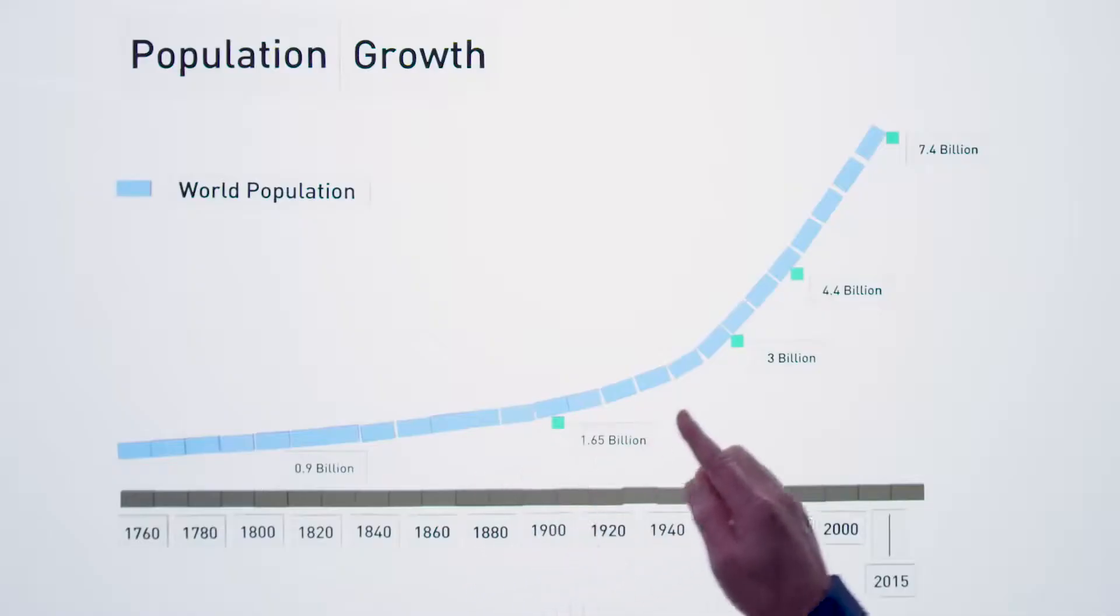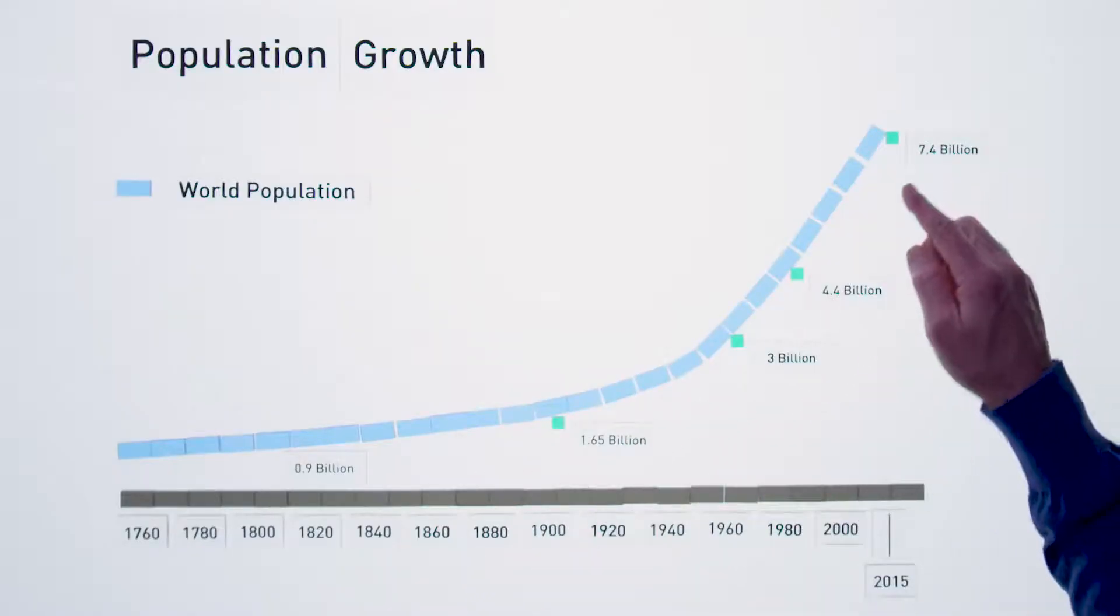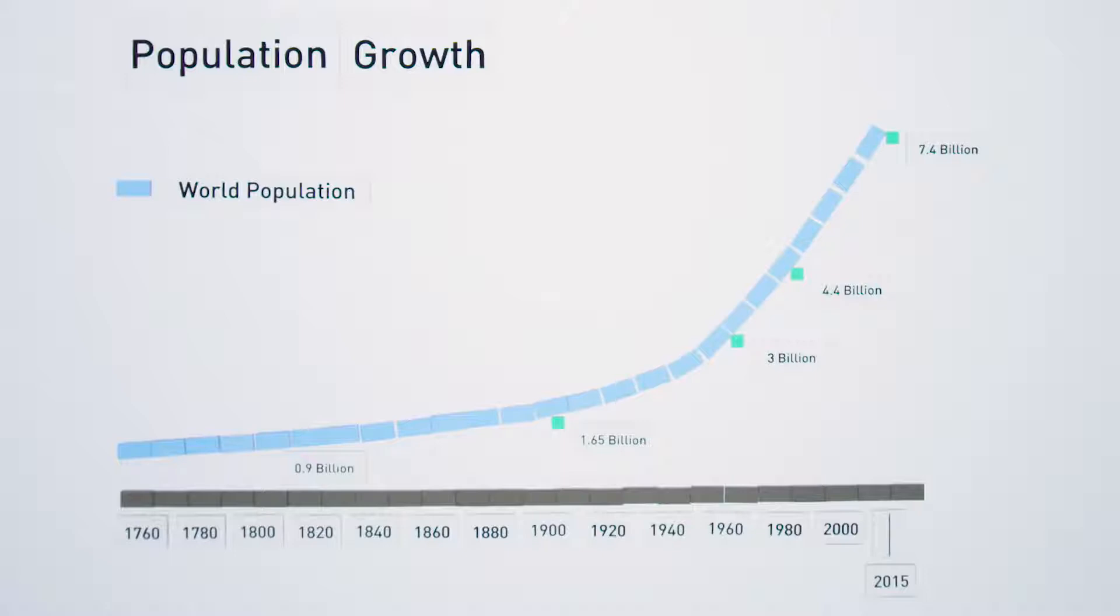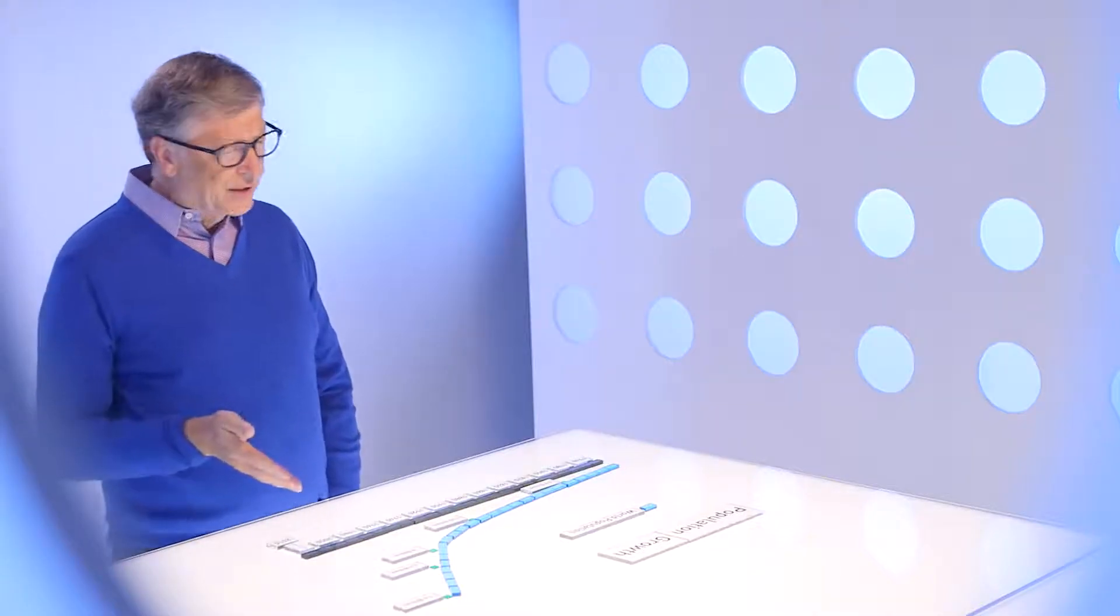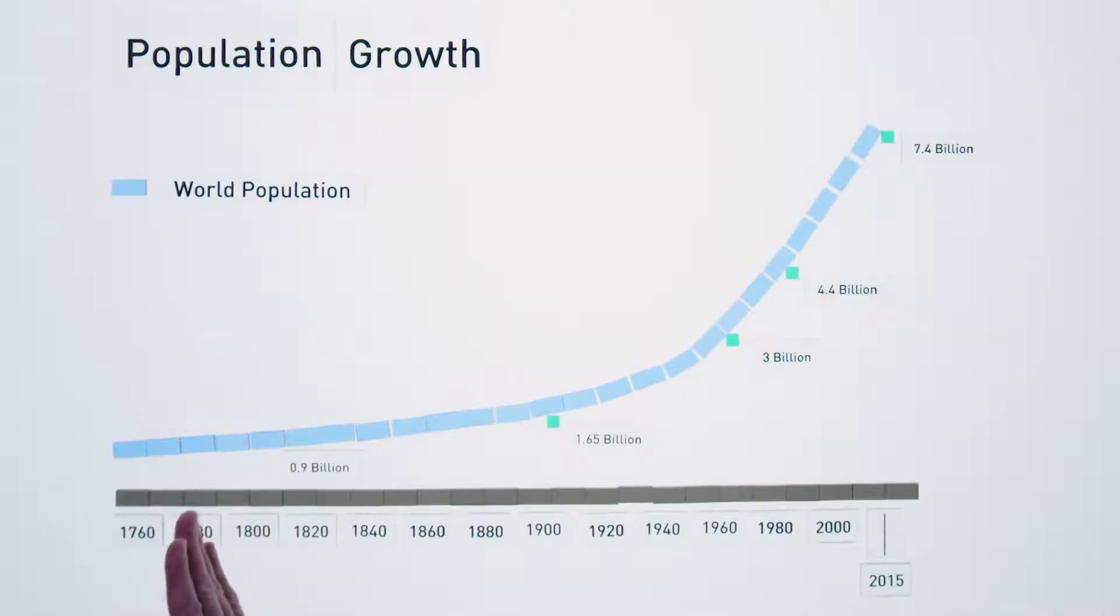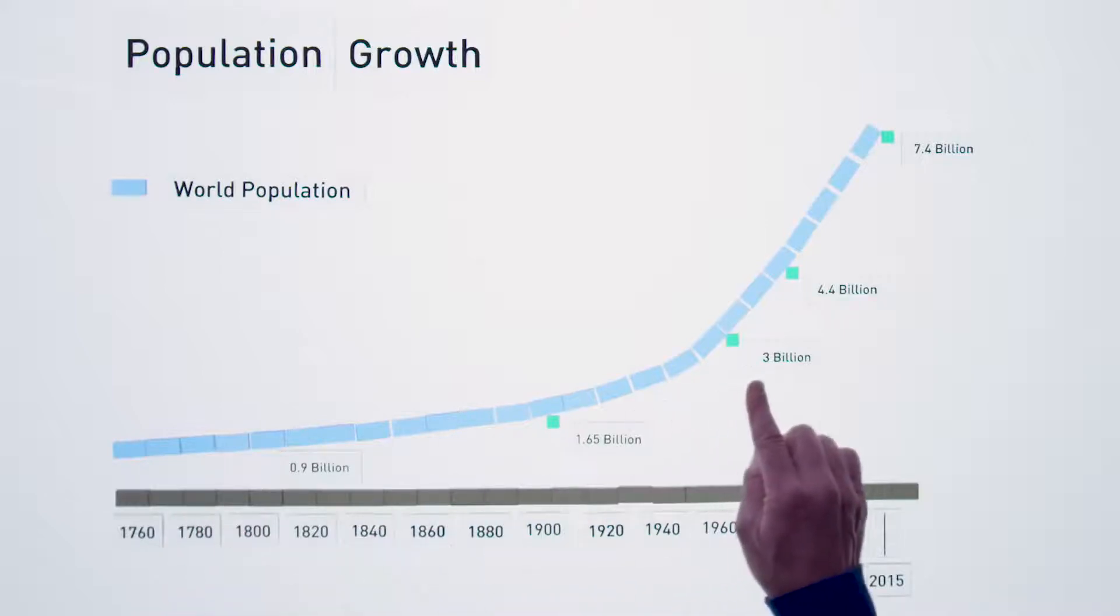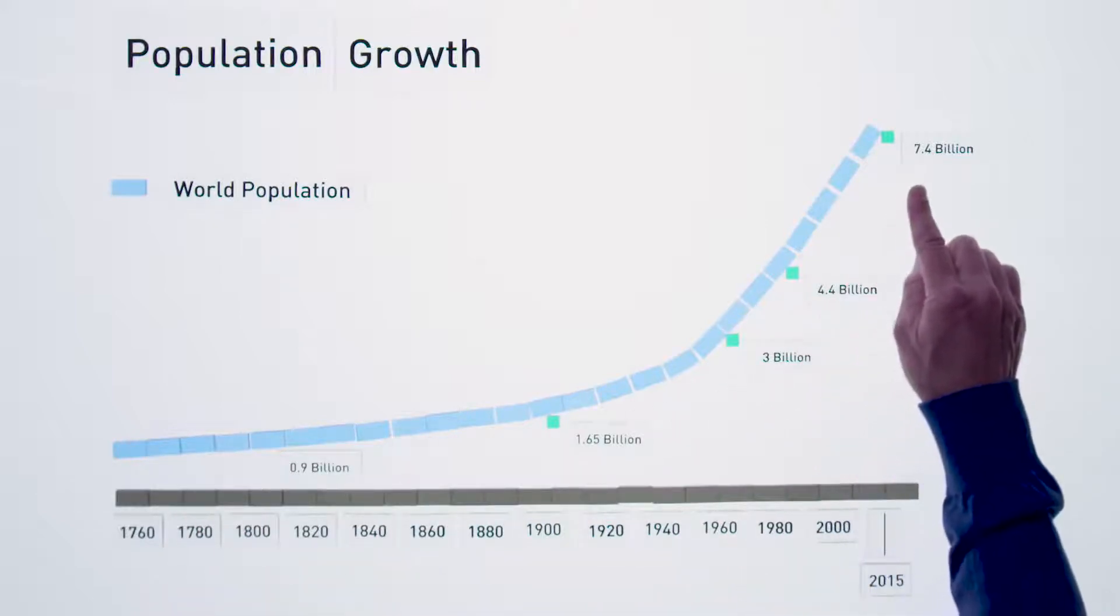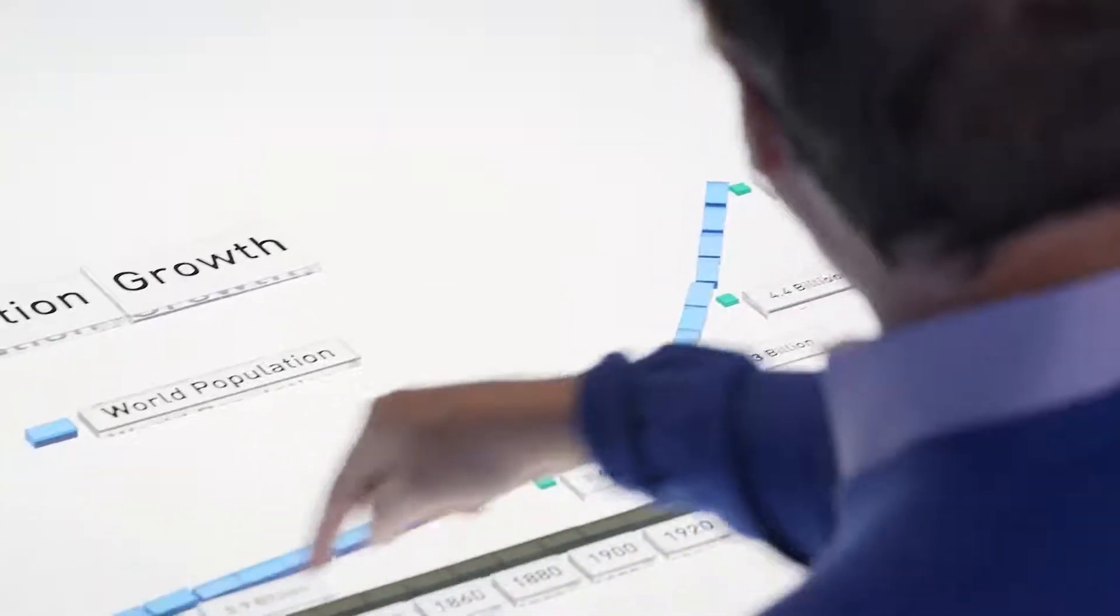Here we can see a chart that looks at the total world population over the last several hundred years. And at first glance, this is a bit scary. We go from less than a billion in 1800, and then three, four, five, six, and 7.4 billion where we are today is happening even faster.